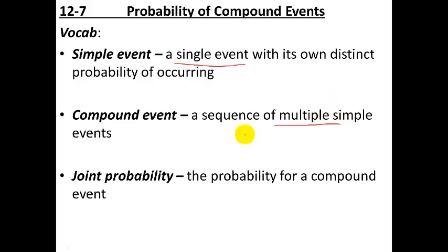Joint probability is the probability of the compound event coming off the way that you want it to. The compound event is what the sequence of events is called, and the joint probability is the overall probability for that compound event to occur.